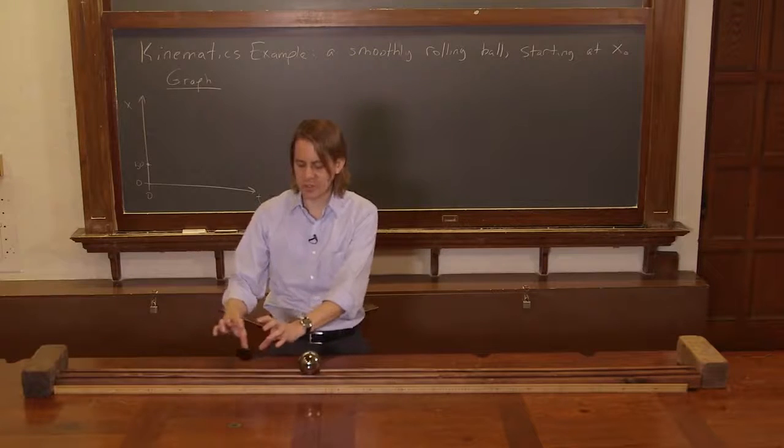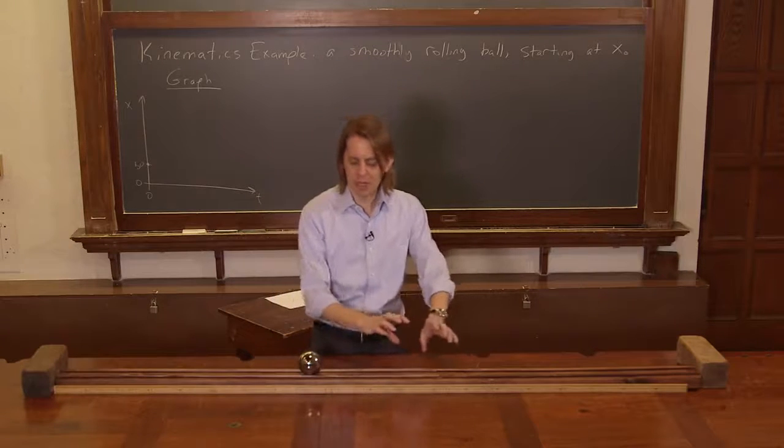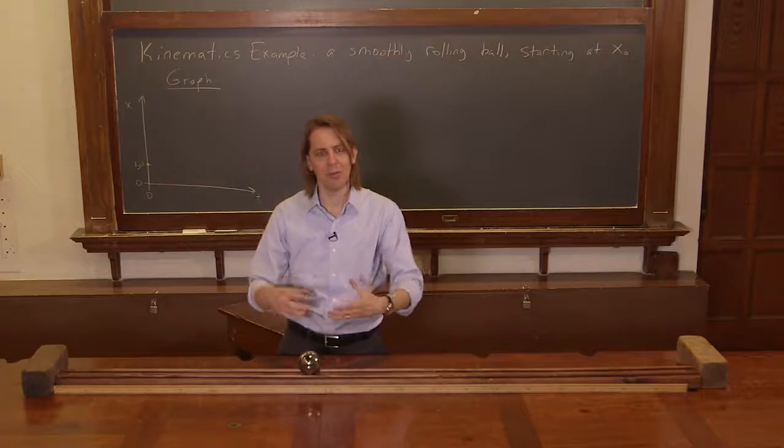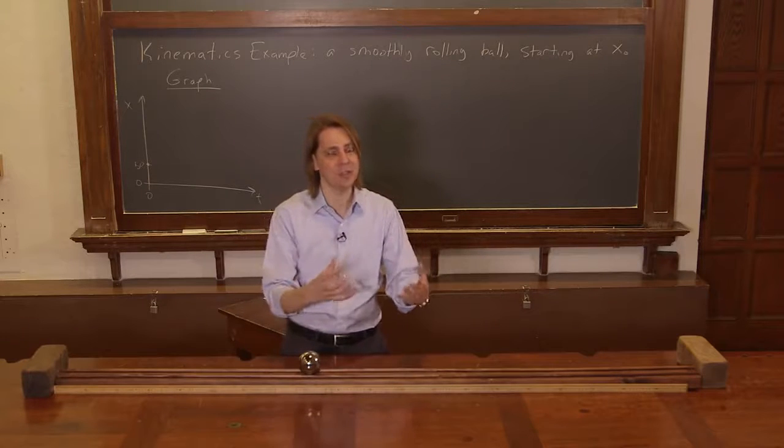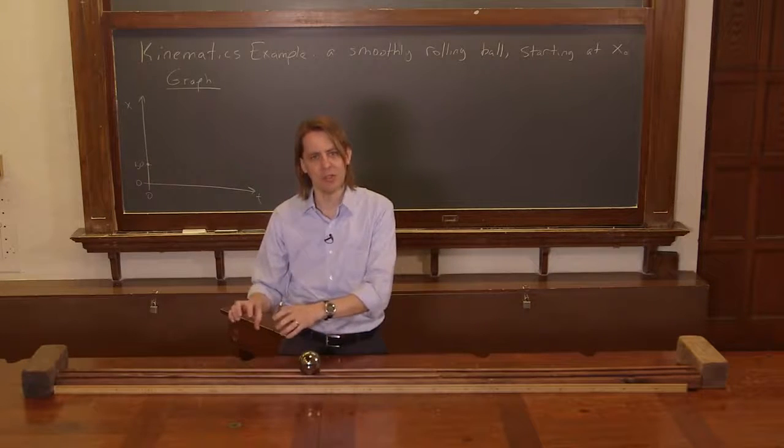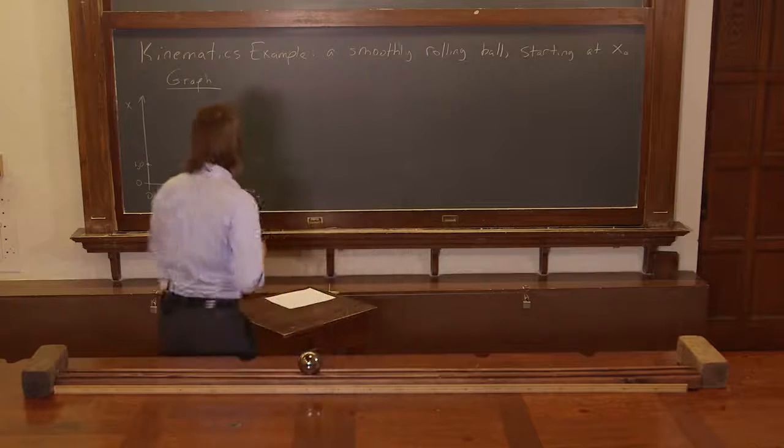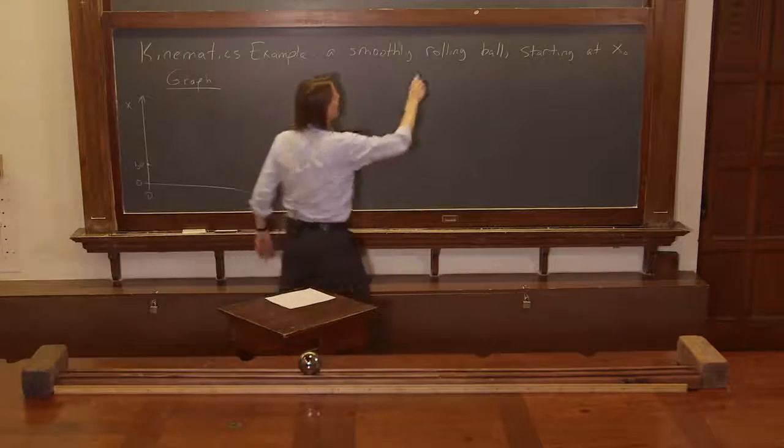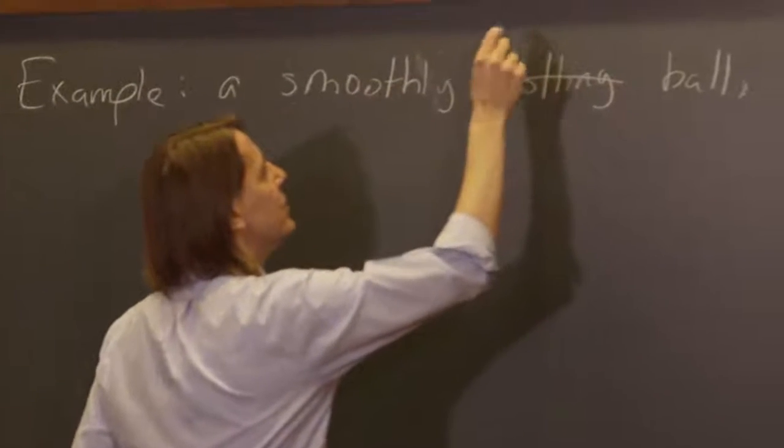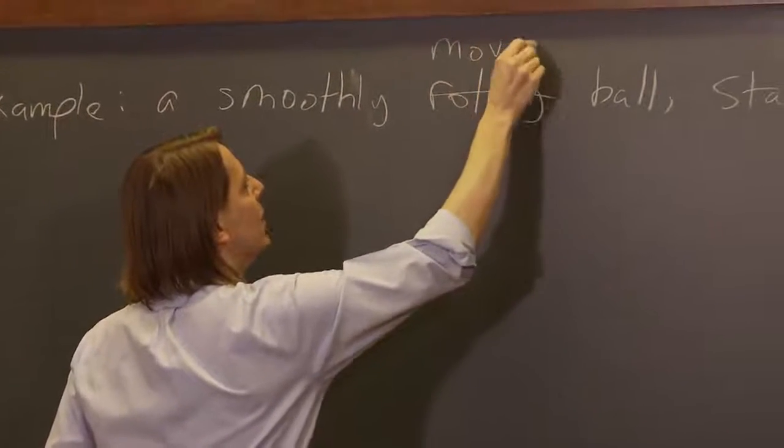For now, we're going to assume, we're going to pretend that it's just sliding, that it's really just a simple motion with no rolling involved. So we're kind of doing a model, right? A model is when you have a really complicated situation you describe with simpler equations.